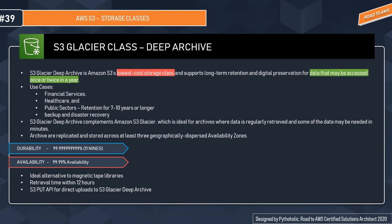S3 Glacier Deep Archive is Amazon S3's lowest-cost storage class, supporting long-term retention and digital preservation for data that may be accessed once or twice a year. It is designed for customers in highly regulated industries — financial services, healthcare, public sectors — that retain data sets for 7 to 10 years or longer to meet regulatory compliance. All objects are replicated across at least three geographically dispersed availability zones with 11 nines durability and can be restored within 12 hours.